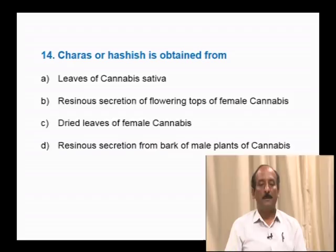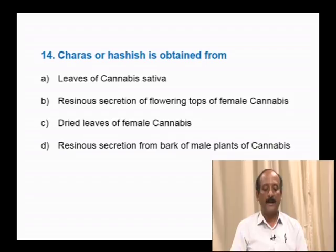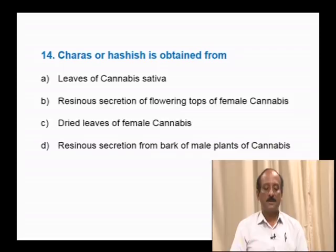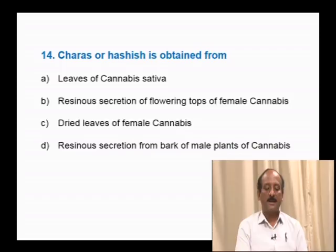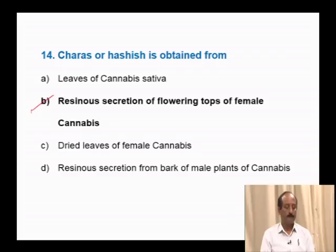Question number 14: Charas is obtained from — leaves of Cannabis sativa; resinous secretion of flowering tops of female cannabis; dried leaves of female cannabis; resinous secretion from bark of male plant of cannabis. Charas is an abusing drug obtained from Cannabis sativa. It is obtained from the resinous secretion of flowering tops of female cannabis. The correct answer is option B.